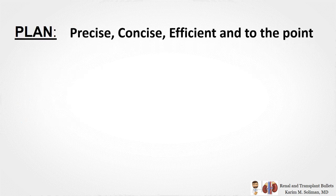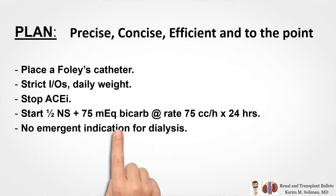Moving on to the plan: be very precise, concise, efficient, and to the point. Example: place a Foley catheter, strict I's and O's, daily weight, stop ACE inhibitors, start half normal saline plus 75 mEq of bicarb at a rate of 75 cc per hour, no emergent indication for dialysis. Recommendations to the primary team should be very clear — don't let them get lost reading through your entire note.